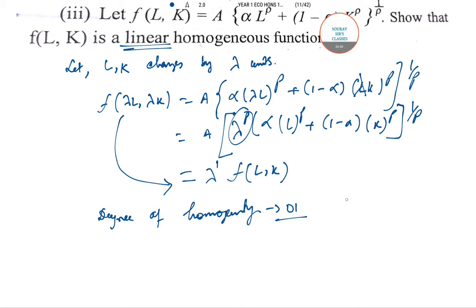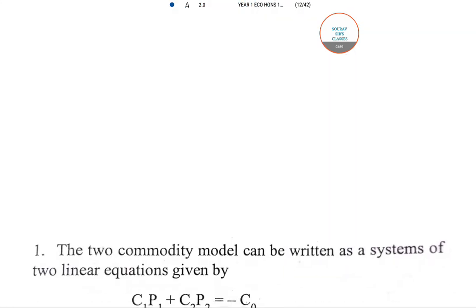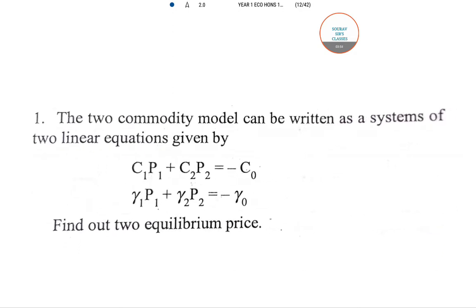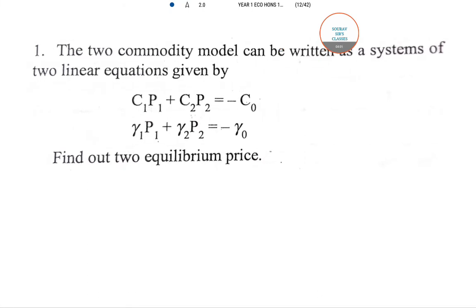Note that the degree of homogeneity can be a fraction or even less than 0. Next, two-commodity models can be written as a system of two linear equations — find the equilibrium price. The approach is to multiply the equations by gamma 1 and C1 respectively. The same idea applies to the second case as well, and you can directly get the equilibrium price. If you have any doubts regarding the solution, write in the comment section below and I will solve it for you.